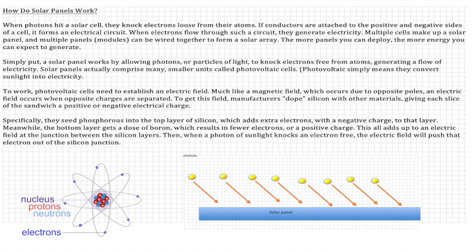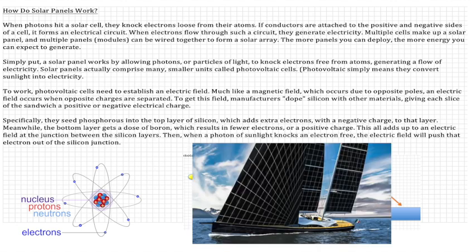Solar panels actually comprise of many smaller units called photovoltaic cells. Now photovoltaic cells simply means they convert sunlight to electricity.